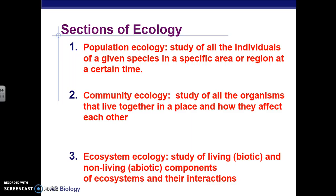Then we're going to move on to community ecology, which is the study of all organisms living in a given area — so organisms of different species and how they relate to each other. For example, in a community you could have cats and mice. How do the cats and mice get along if they're living in the same area? How do they affect each other?